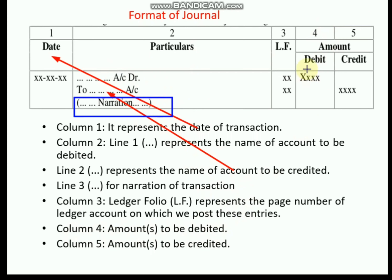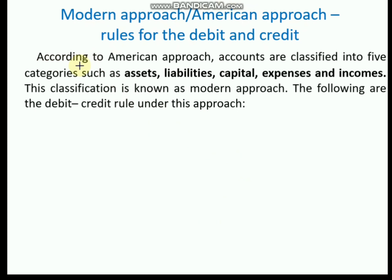Column four is the amount to be debited, and column five is for crediting the amount. Usually these two amounts are the same because journal entries are based on the double entry principle — for every debit there will be a corresponding credit. So the debit amount and credit amount should always be equal.